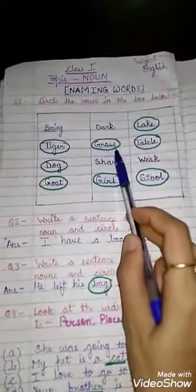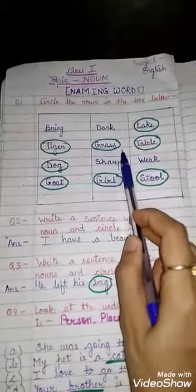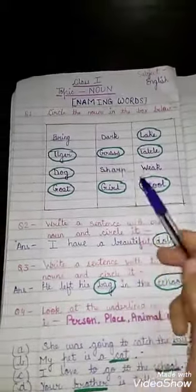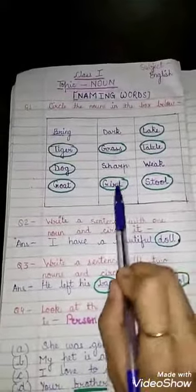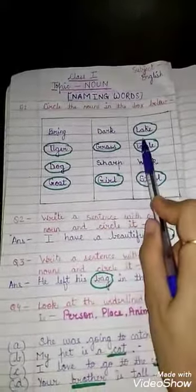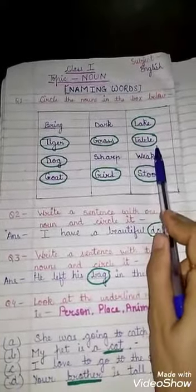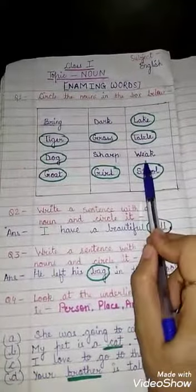'Dark' means andhera — yeh noun nahin hai. 'Grass' means ghas, it is a thing, so it's a noun. 'Sharp' means nukila — yeh noun nahin hai. 'Girl' is a person, toh it's a noun. 'Lake' is a place, it's also a noun. 'Table' is a thing, so it's a noun. 'Weak' means kamzor — yeh noun nahin hai. 'Stool' is a thing, so it's a noun. So these are the nouns in the box.